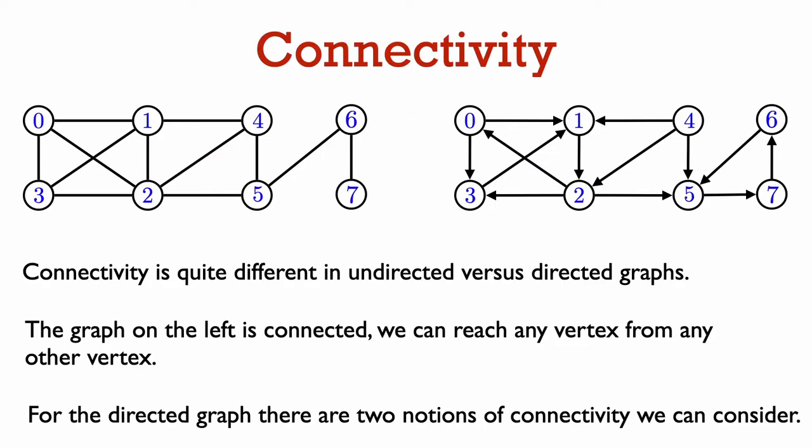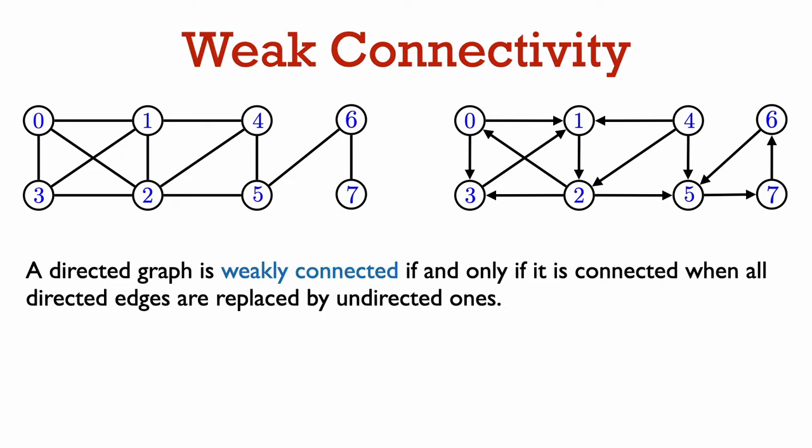Connectivity is a richer notion in directed graphs than in undirected graphs. An undirected graph is connected if and only if there is a path between every pair of vertices, so the undirected graph on the left here is connected. For directed graphs, there are two notions of connectivity we can consider. A directed graph is weakly connected if and only if the graph obtained by replacing all the directed edges by undirected ones is connected when viewed as an undirected graph. If we replace all the directed edges of the graph on the right by undirected ones, we get the graph on the left, so this directed graph on the right is weakly connected.